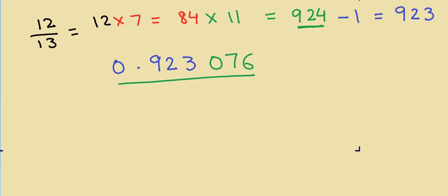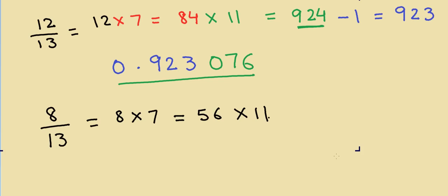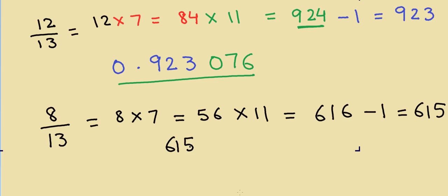Let's do one more example: 8 divided by 13. I take 8 and multiply by 7: 7 times 8 is 56. Then I multiply 56 by 11: 5 plus 6 is 11, carry 1, giving 616. Subtract 1 to get 615. The 9's complement of 615 is 384. So the answer is 0.615384615384...